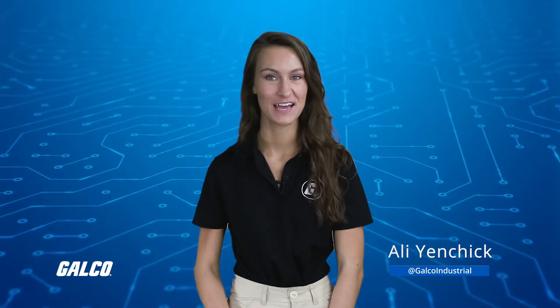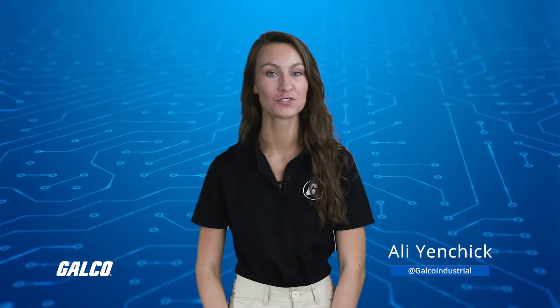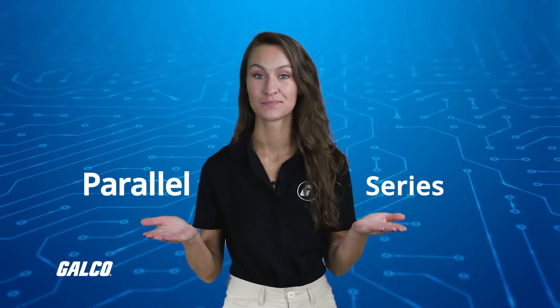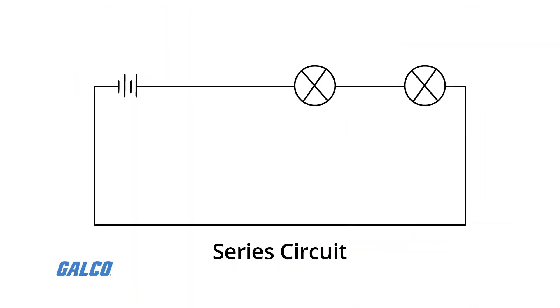There are two basic ways in which to connect more than two circuit components: series or parallel. The basic idea of a series connection is that components are connected end-to-end in a line to form a single path through which current can flow.